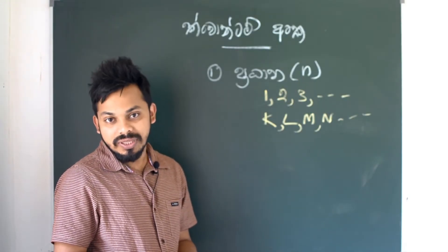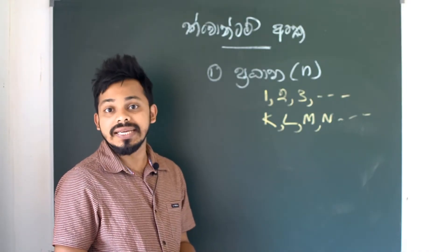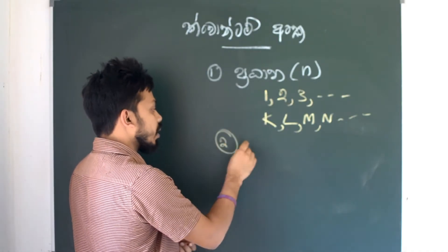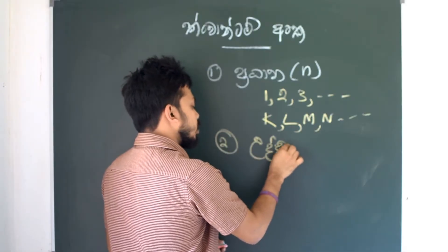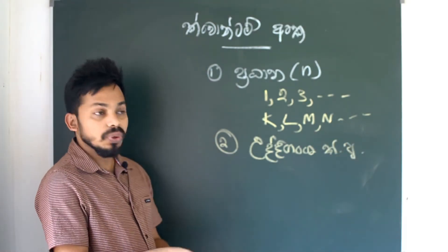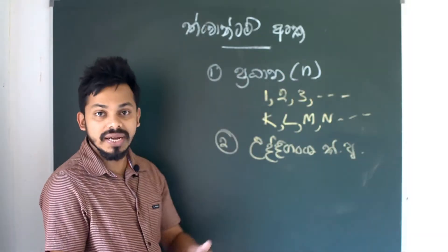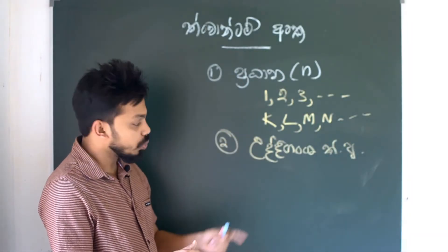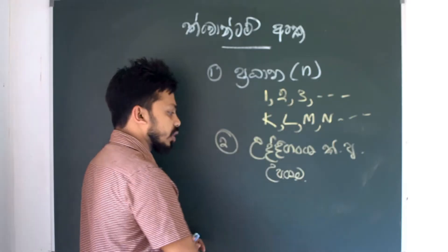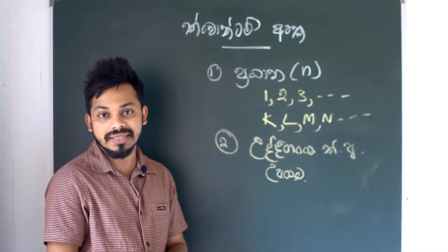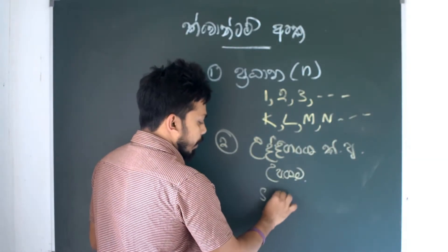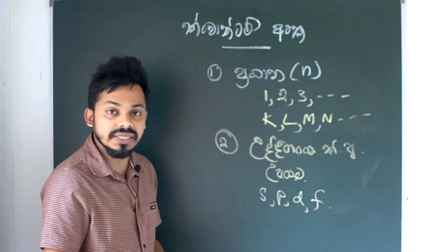If you enter the blend of the blend, here in the blend of the blend. Let's just say the blend of the blend. Now we're going to use the blend of the blend. The subshell notation includes s, p, d, f.